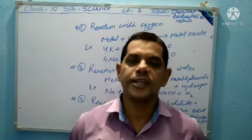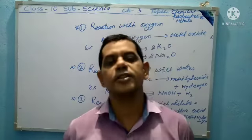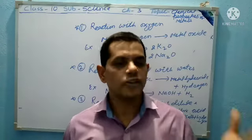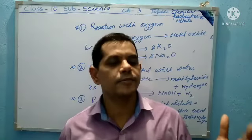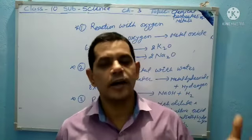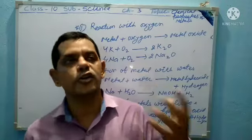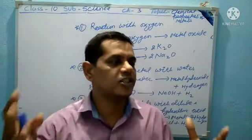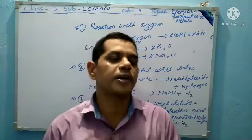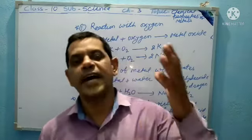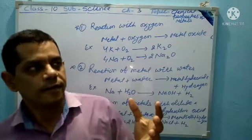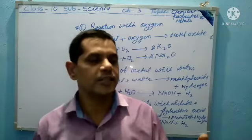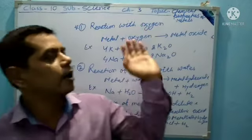In the chemical properties of metal, there are three properties: first, reaction with oxygen; second, reaction of metal with water; third, reaction of metal with dilute acid. I also discussed the internal and color changes that happen in the chemical properties of metals — reactions happening with water, oxygen, and dilute acid. First, I explain the reaction with oxygen.